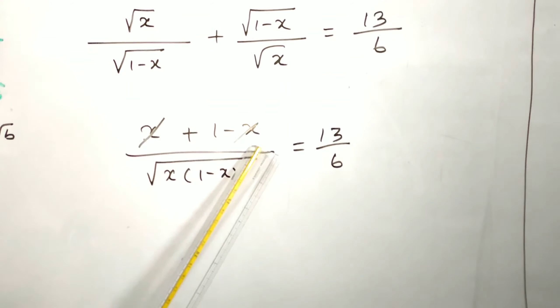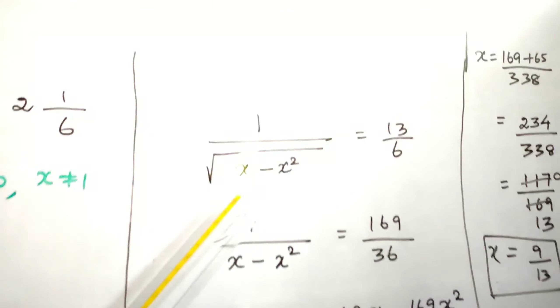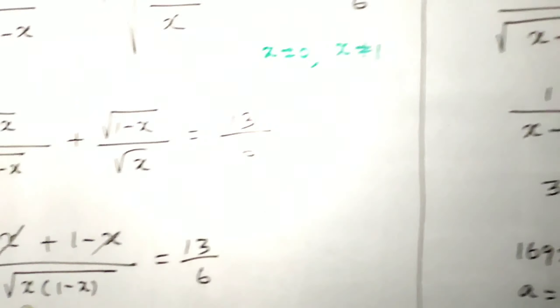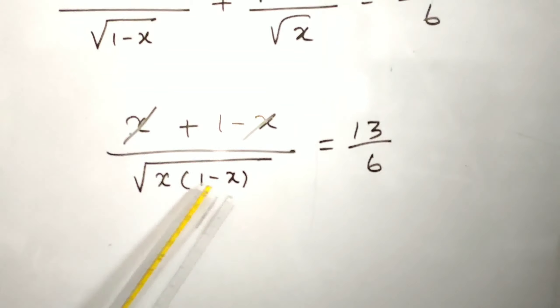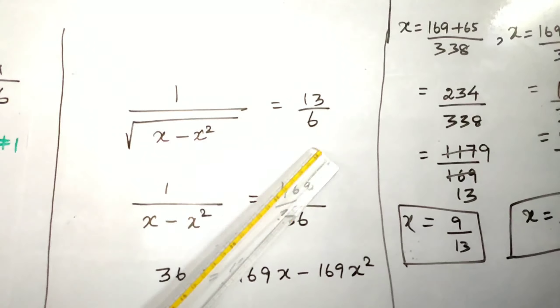This 1 and minus x get cancelled. Multiplying x inside: x times 1 is x, then x times x is x squared. So root of x minus x squared equals 13 by 6.